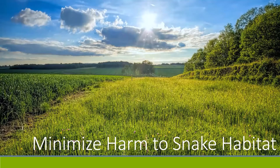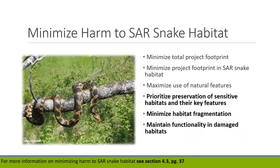In some cases it may not be possible to avoid all adverse effects to SAR snake habitat, but there are steps to minimize these effects significantly. When SAR snake habitat cannot be avoided altogether, plan the project footprint to have as little overlap as possible. Key recommendations include: keep the project footprint as small as possible, build up rather than out, try to keep as much of the footprint outside of SAR snake habitat, maximize use of natural features, prioritize preservation of sensitive habitat, minimize habitat fragmentation, and maintain functionality in damaged habitats.